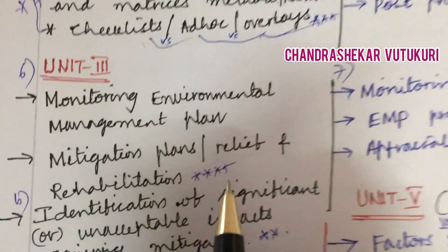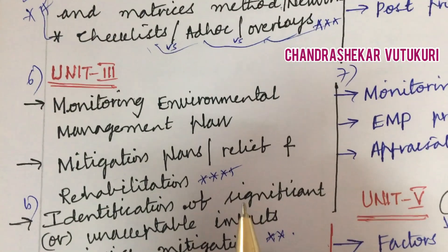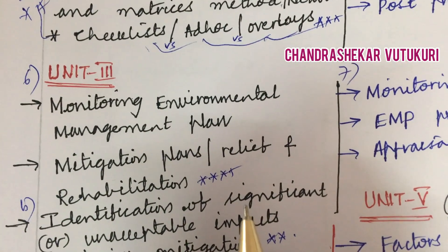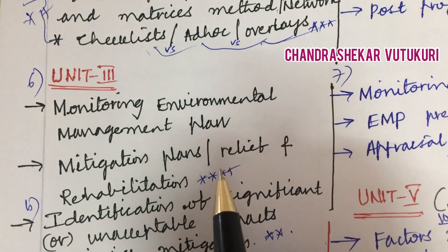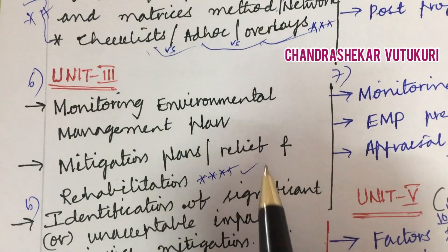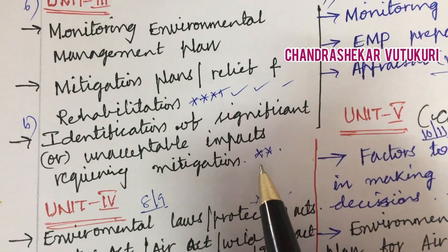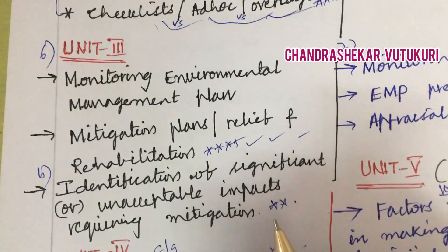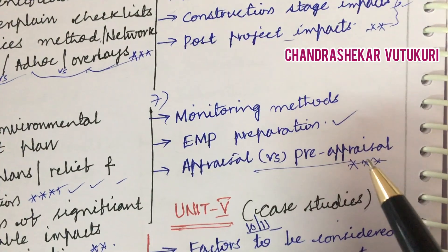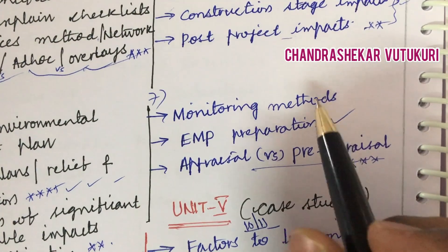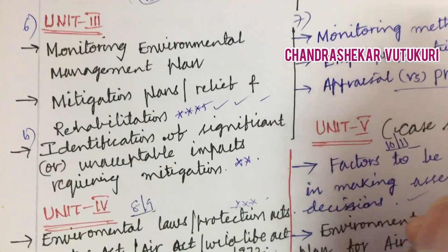Moving into Unit 3, I have uploaded a video on how to approach the theory paper in university examinations to score better marks — please go through that video on this channel. The monitoring environmental management plan, mitigation plans, and relief and rehabilitation may be short and long questions. Identification of significant or unacceptable impacts requiring mitigation is a top question likely to appear as question 6. Question 7 covers monitoring methods, EMP preparation, and appraisal versus pre-appraisal methods.